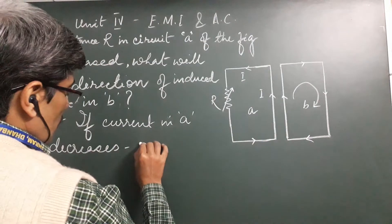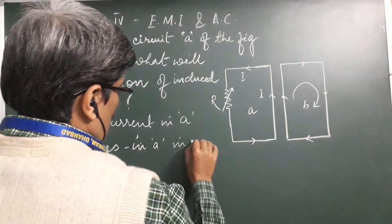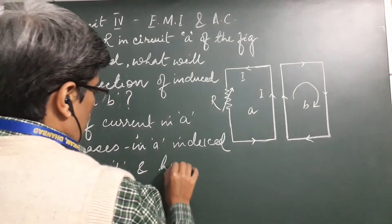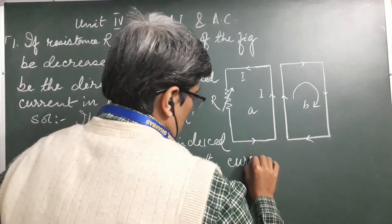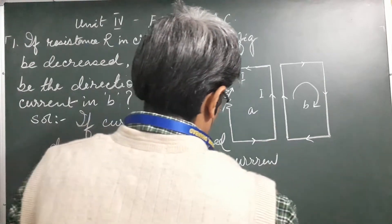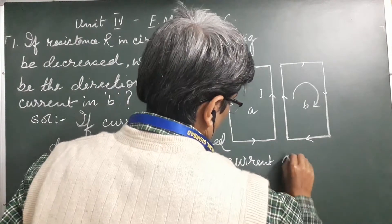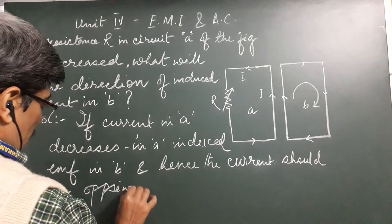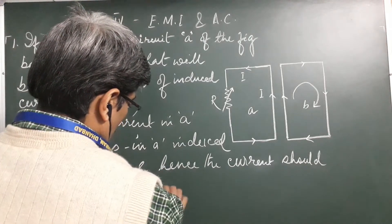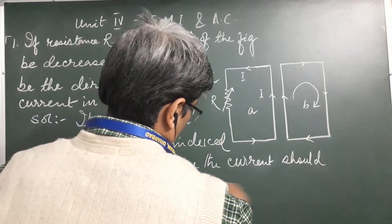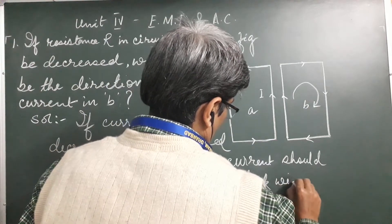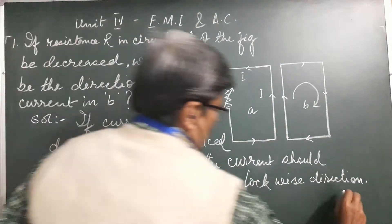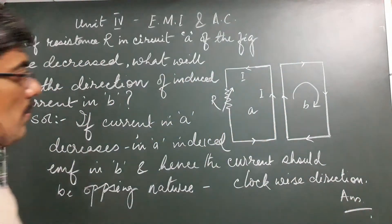If the current decreases in A, the induced EMF in B and hence the induced current should be in opposing nature, which should be in the clockwise direction. This is the answer — a direct outcome of Lenz's law.